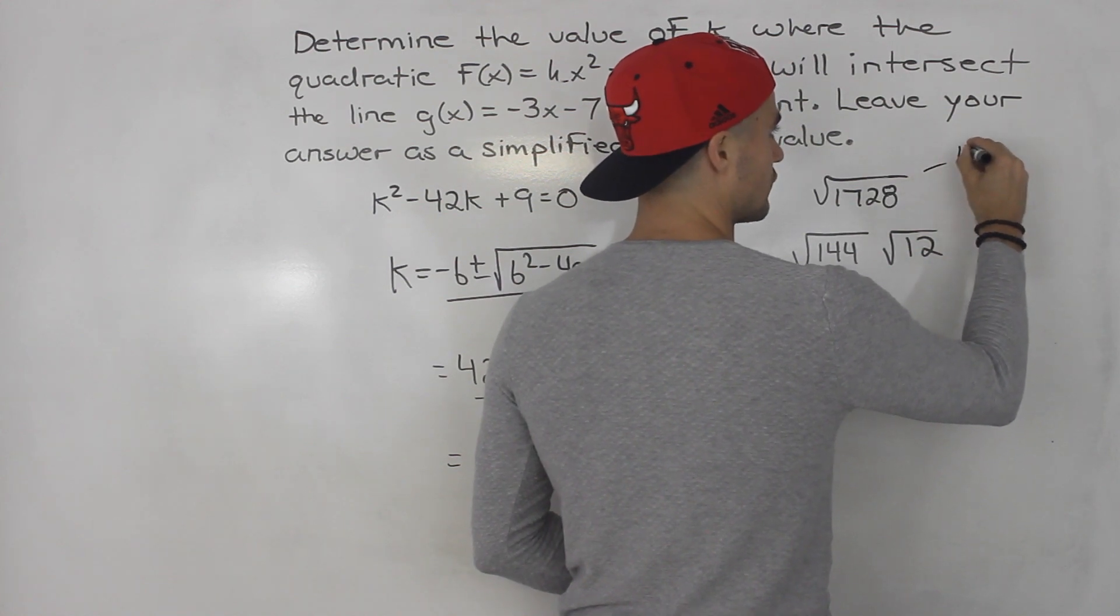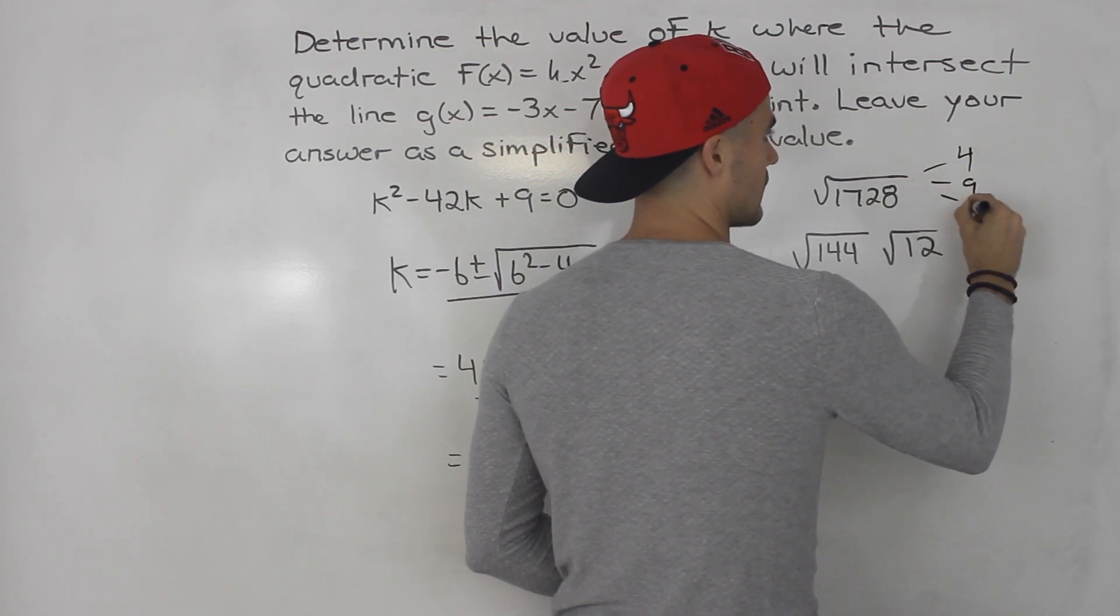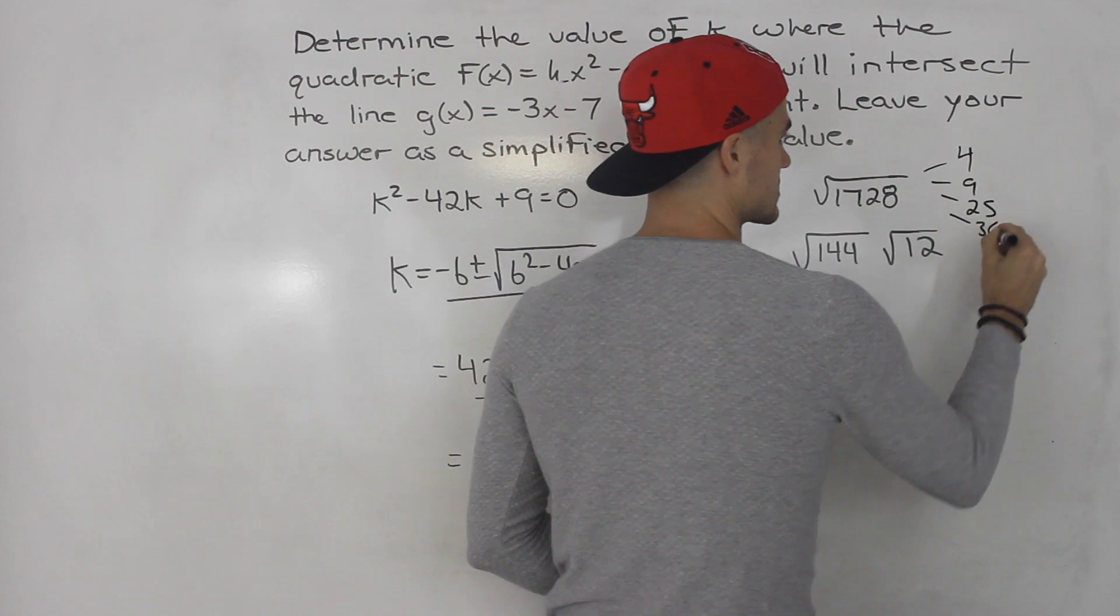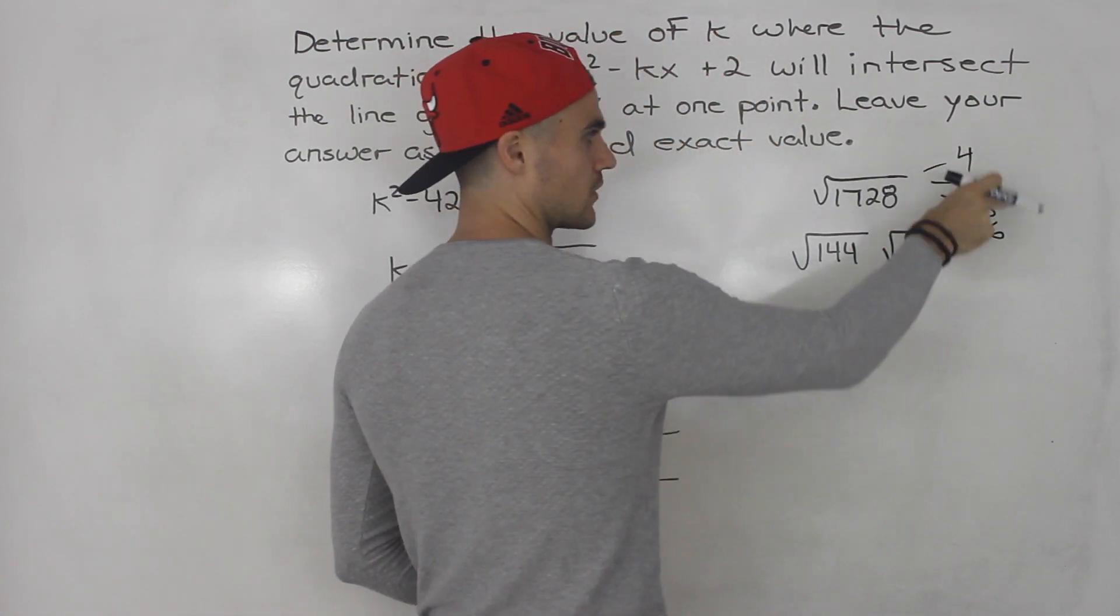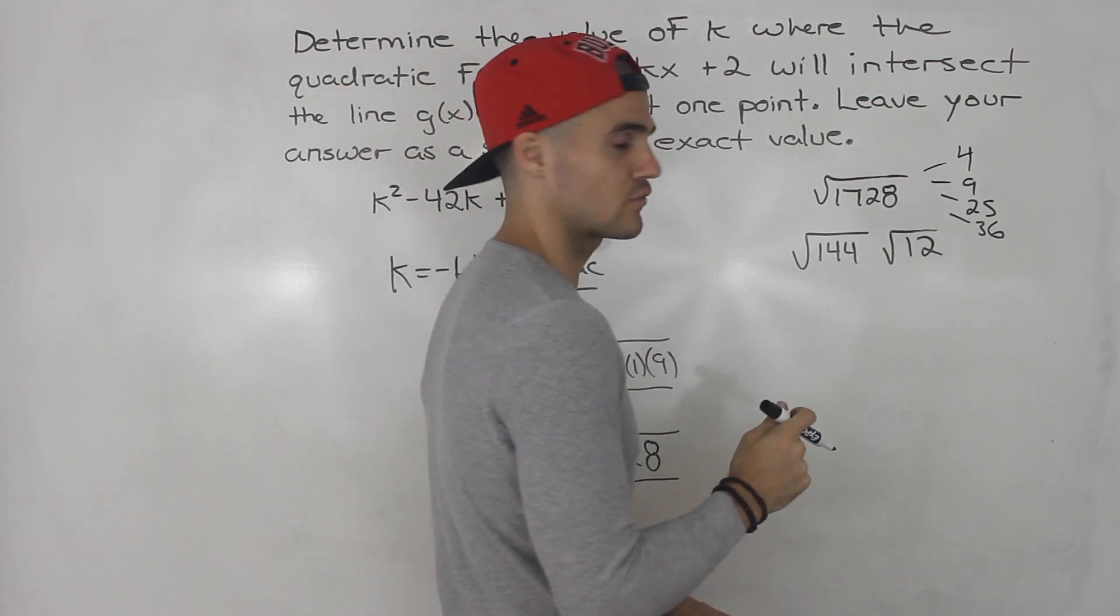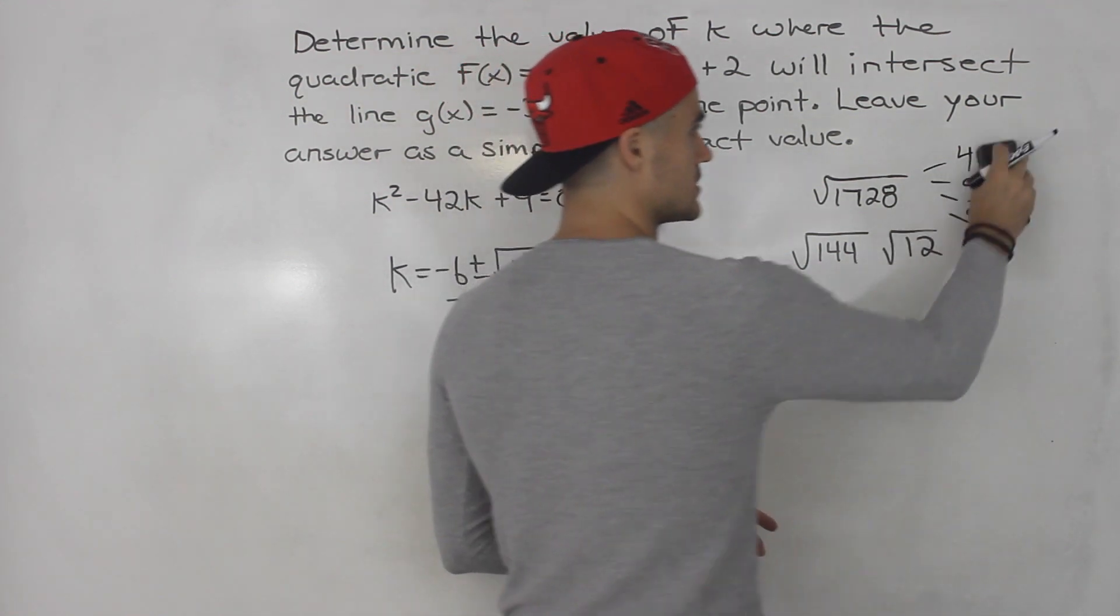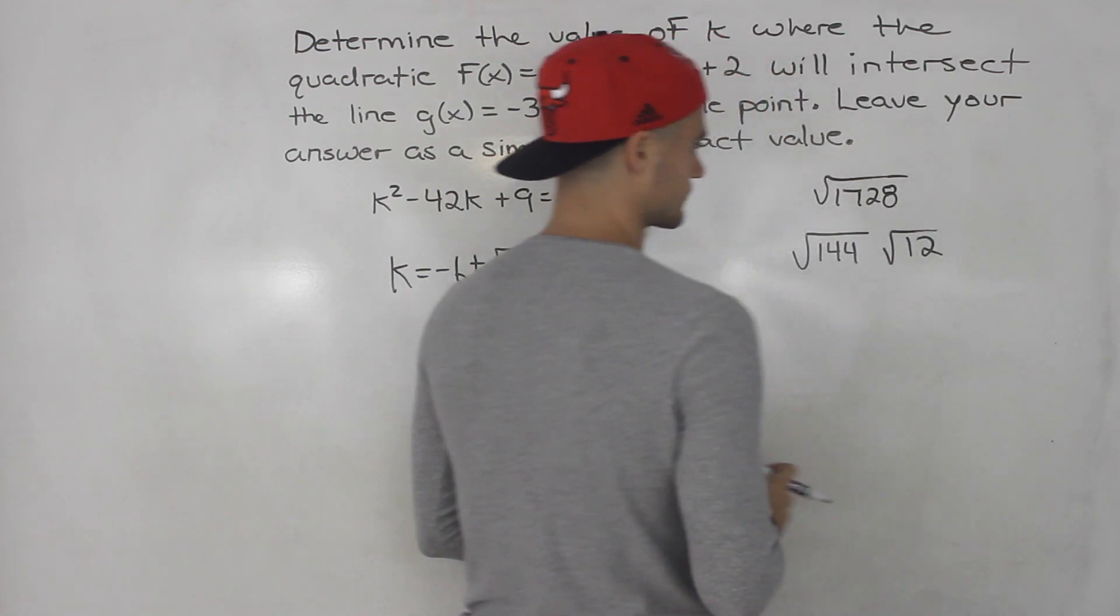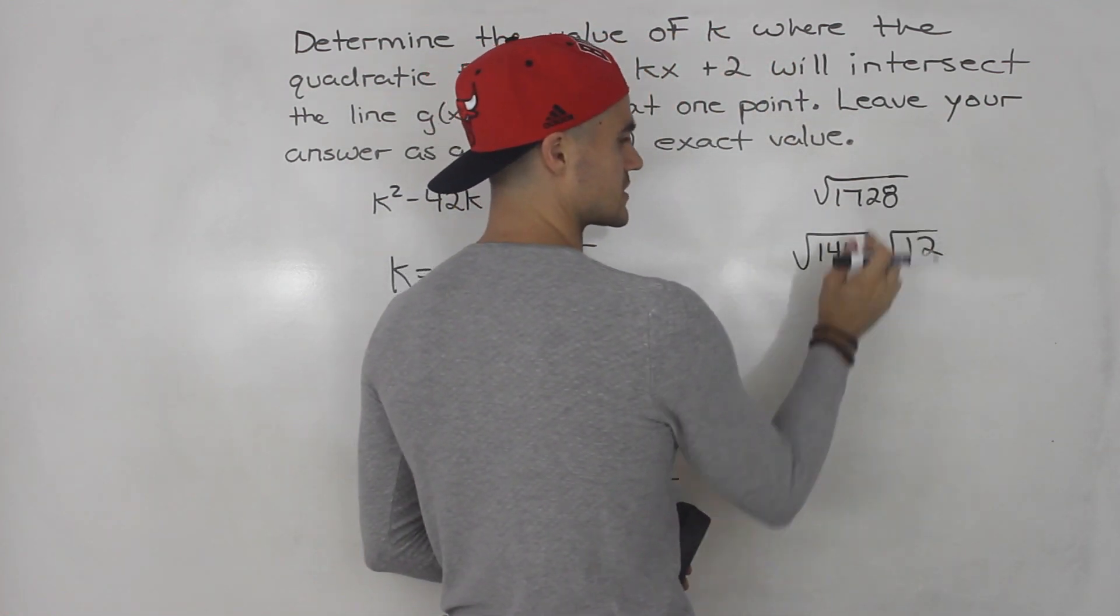So you could take 1728, you could divide it by rootable numbers, like 4, 9, 25, 36. 4 would work. I'm sure one of these other numbers would work as well. But a higher number that even works is 144. So 144 times 12 is 1728.